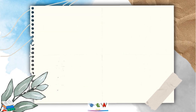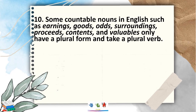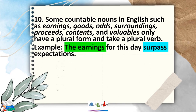Rule 10: some countable nouns in English — such as earnings, goods, odds, surroundings, proceeds, contents, and payables — only have a plural form and take a plural verb. For example, 'The earnings for this day surpass expectations.' With the noun 'earnings,' it is countable and takes a plural verb: 'surpass.'